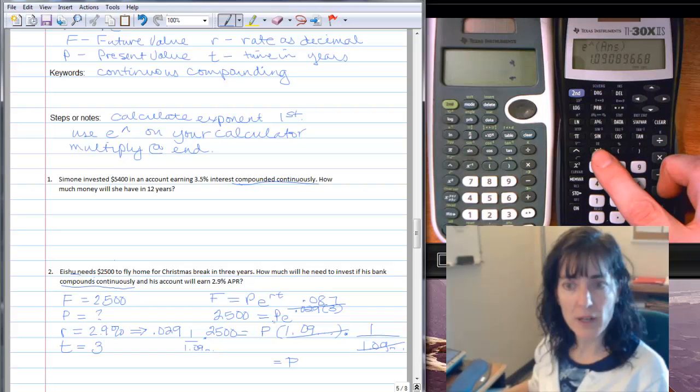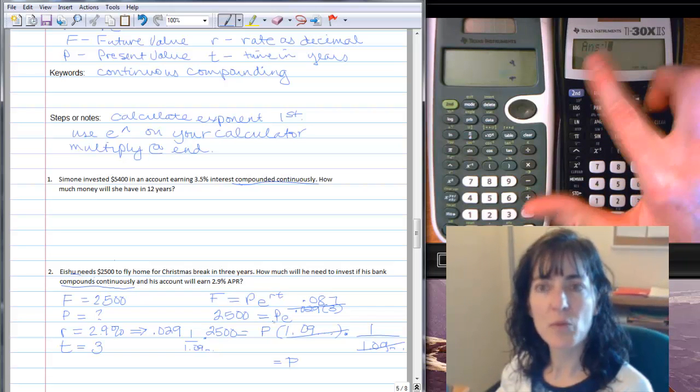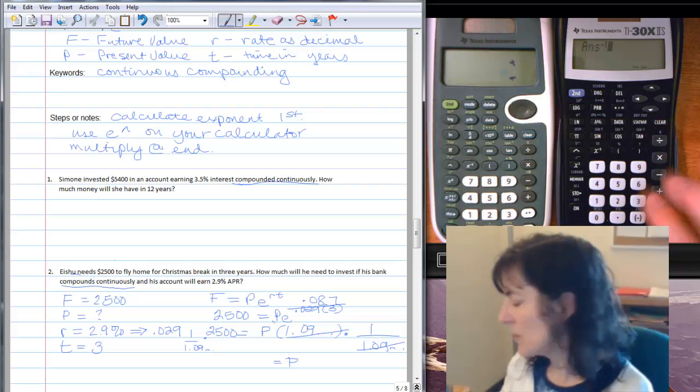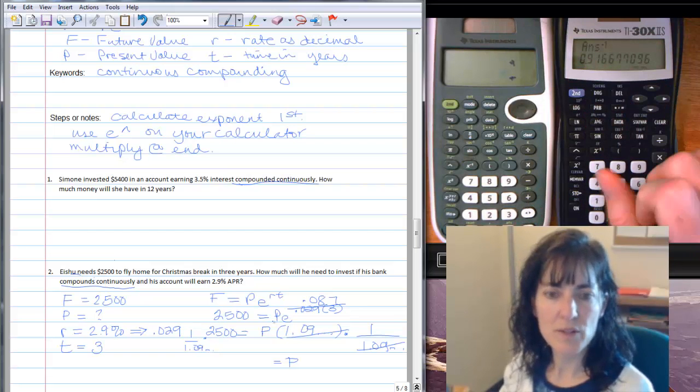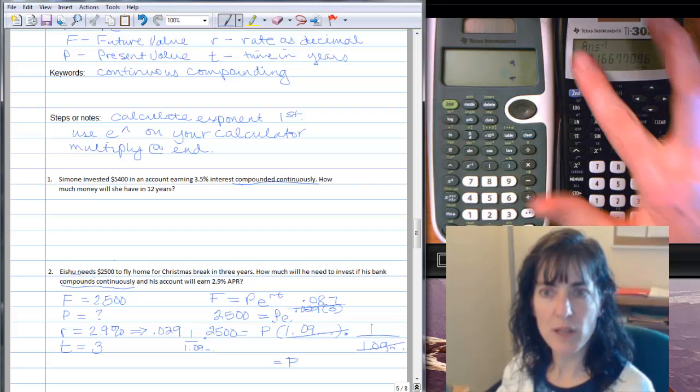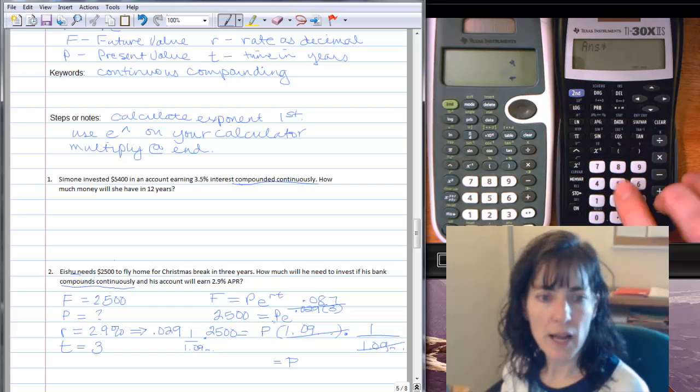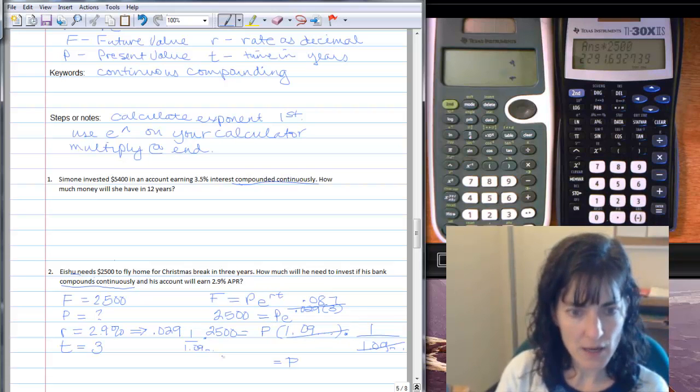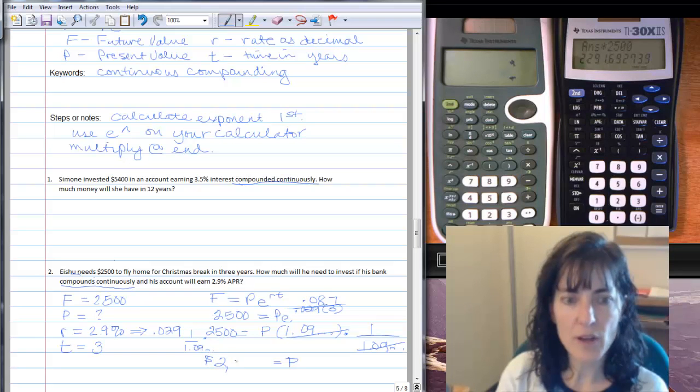And on my calculator, I have the 1.09 but I need to do 1 over it. And that's where I get that x to the negative 1 button coming into play. So x to the negative 1. And see how it says answer to the negative 1. That's the same thing we did a minute ago. It's doing whatever you ended up with on the last calculation, taking it to the negative 1 power. Push enter. And that's the value of the inverse. So 1 divided by 1.09 and so on will give me this .91677 etc. And then I'll just multiply by the 2,500.